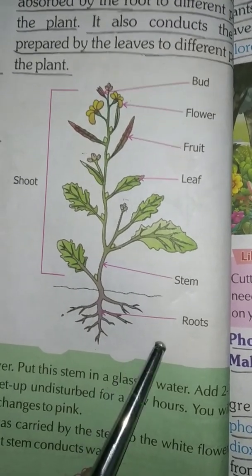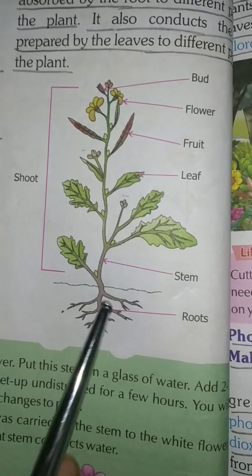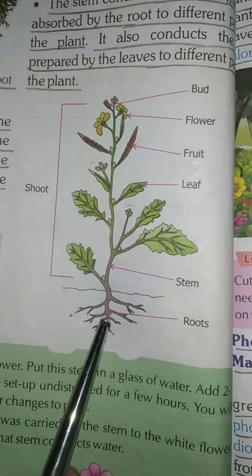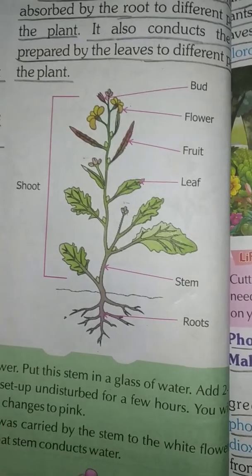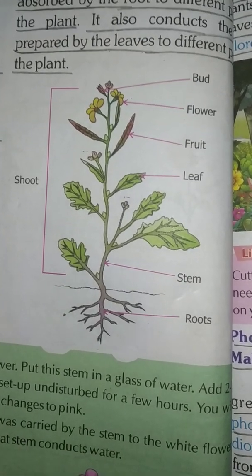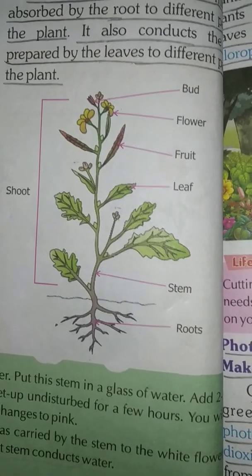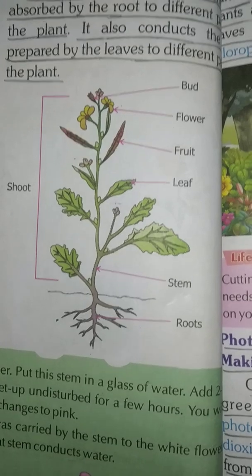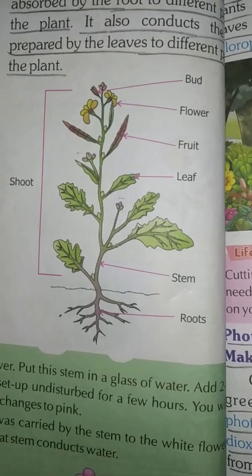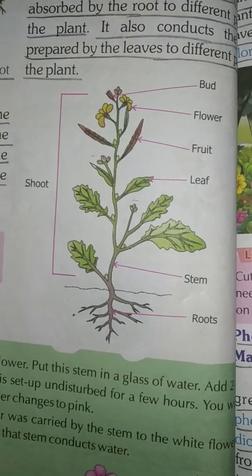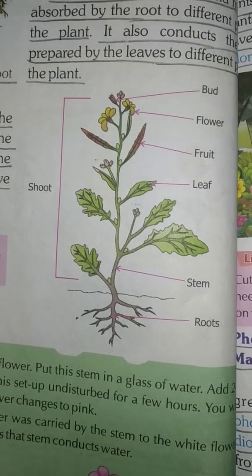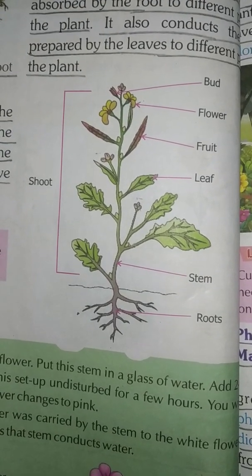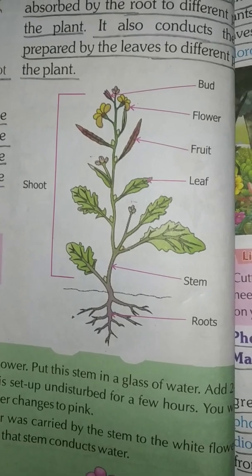Now revise the parts of the plant for 2 minutes. Afterwards we will draw the photosynthesis diagram on the next page. There are two diagrams in the first term exam: parts of the plant and photosynthesis.